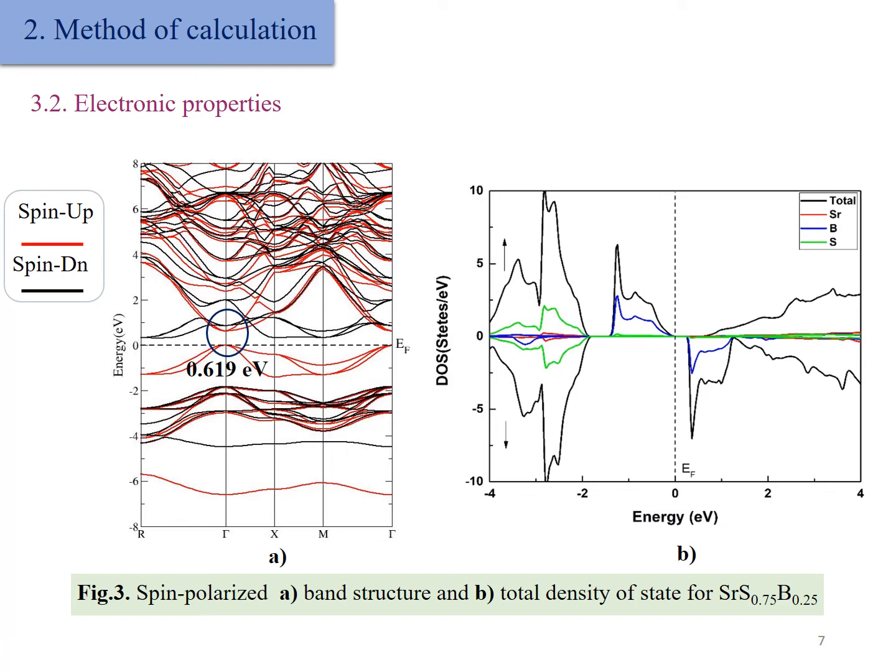And the minority spin being a direct band gap in the Γ-M direction. Figure B also presents the total density of states, which is in accordance with the given band structure.